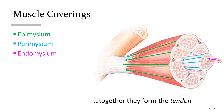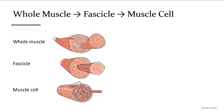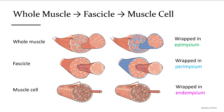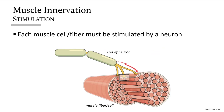Here we go from the whole muscle down to a single muscle cell, also known as a muscle fiber. The whole muscle is wrapped in epimysium, fascicles are wrapped in perimysium, and an individual muscle cell is wrapped in endomysium. Each muscle cell must have a nerve connection to stimulate it.